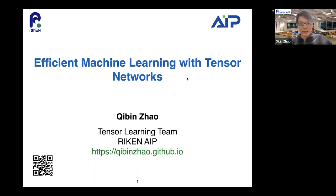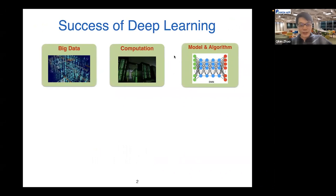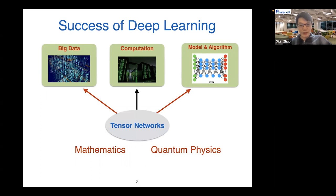Thanks to Volkan for the kind introduction. It's my pleasure to have this opportunity to give a talk today. The title of my talk is Efficient Machine Learning with Tensor Networks. As we know, successful deep learning highly relies on three factors: huge datasets, high-performance computation, and big models with a large number of parameters. The tensor network is a basic mathematical tool, widely studied in quantum physics, and it's also useful for processing large or high-dimensional data.